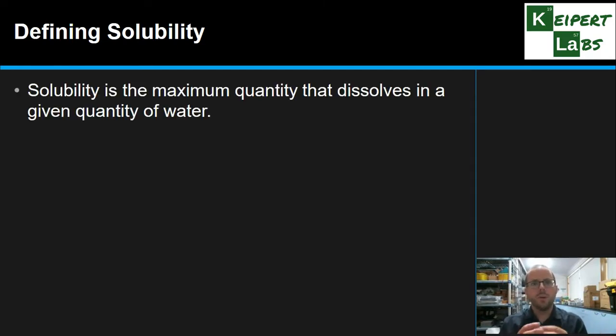Let's define this word, this noun called solubility. Solubility is a measure of the maximum quantity of a substance that will dissolve in a given quantity of a solvent, typically water we're talking about here.